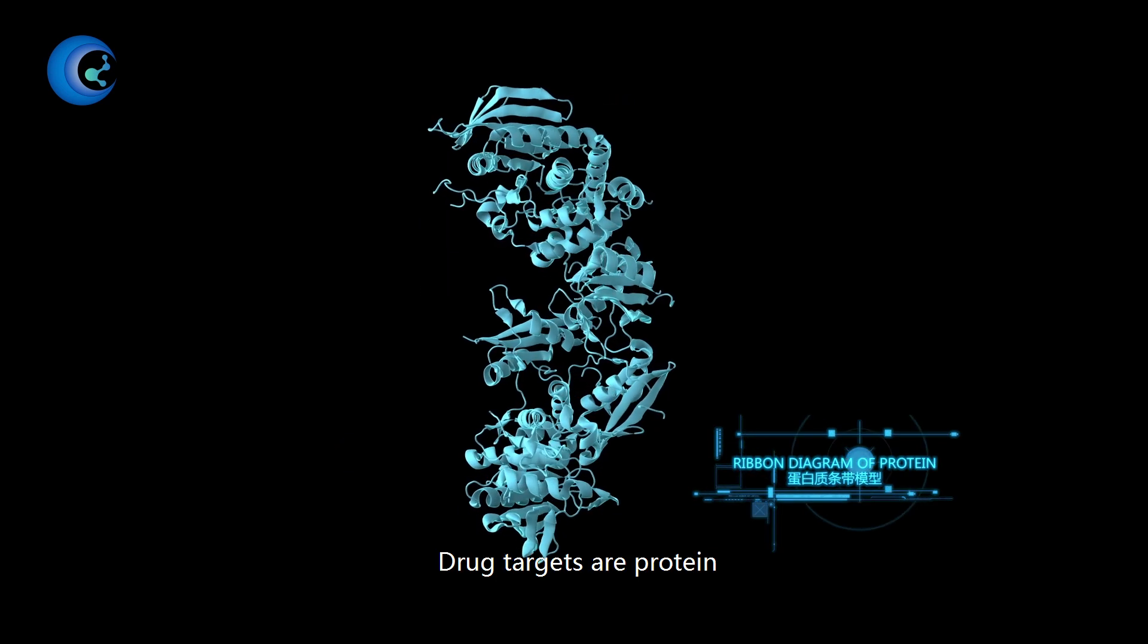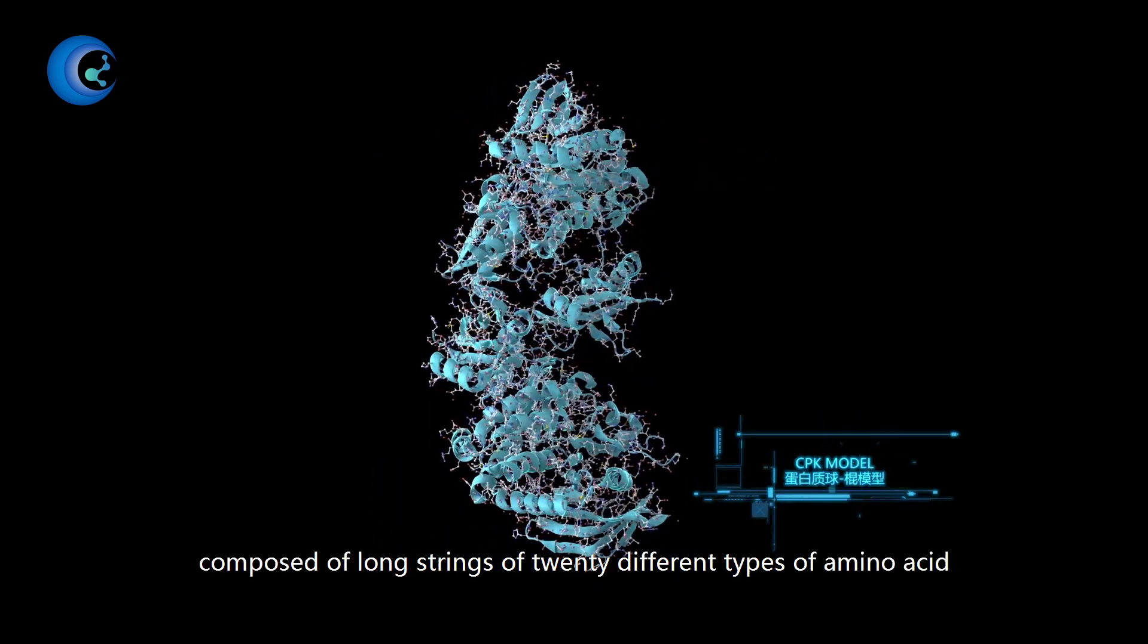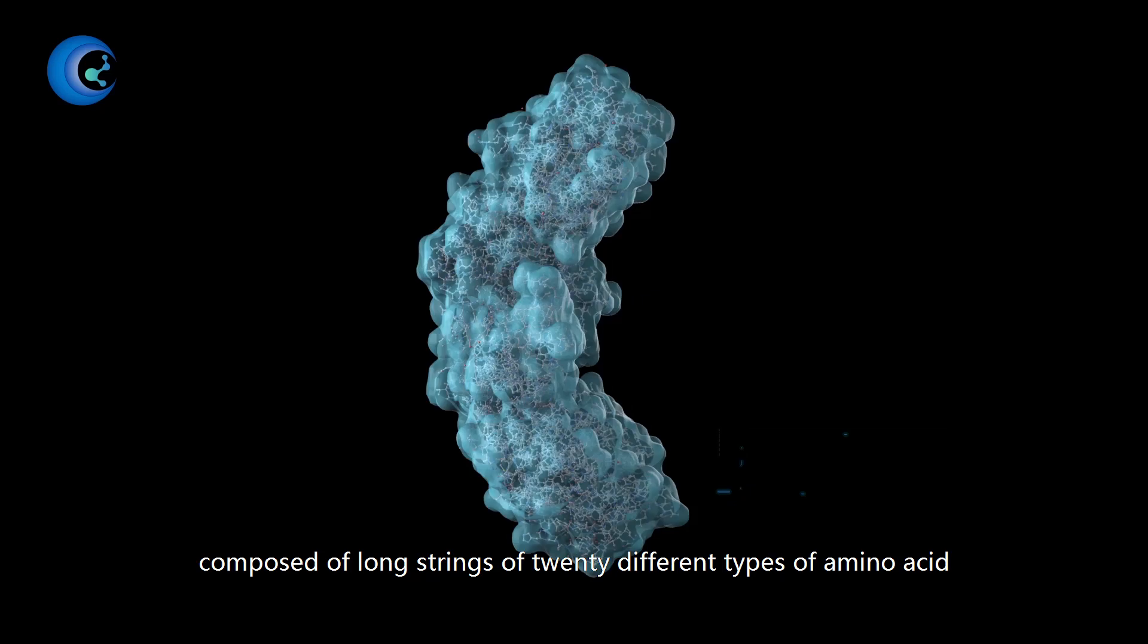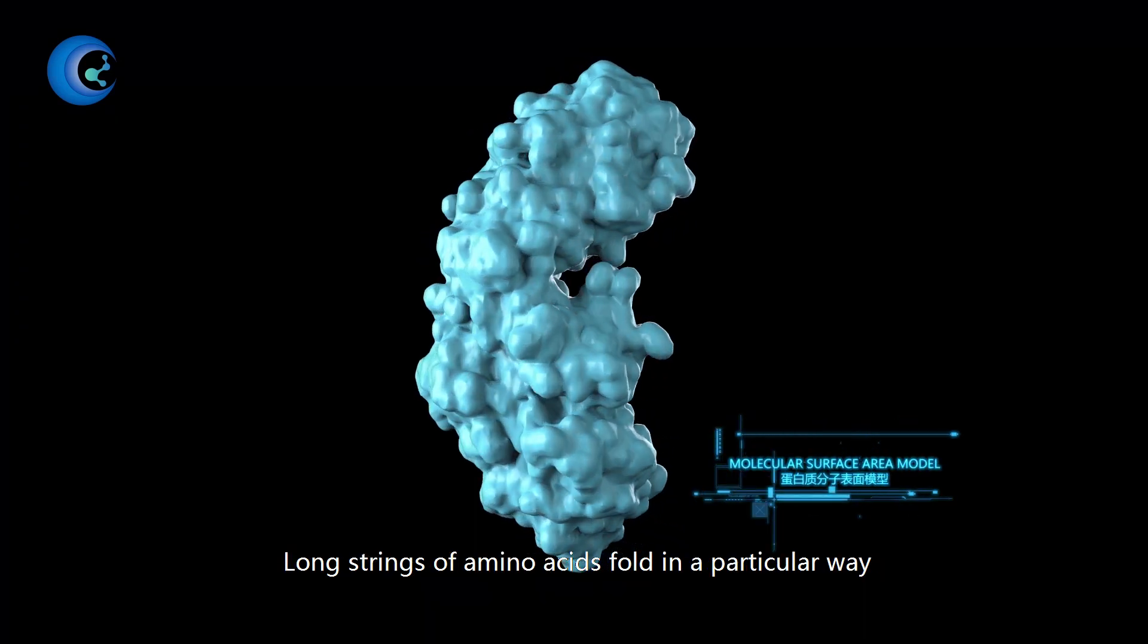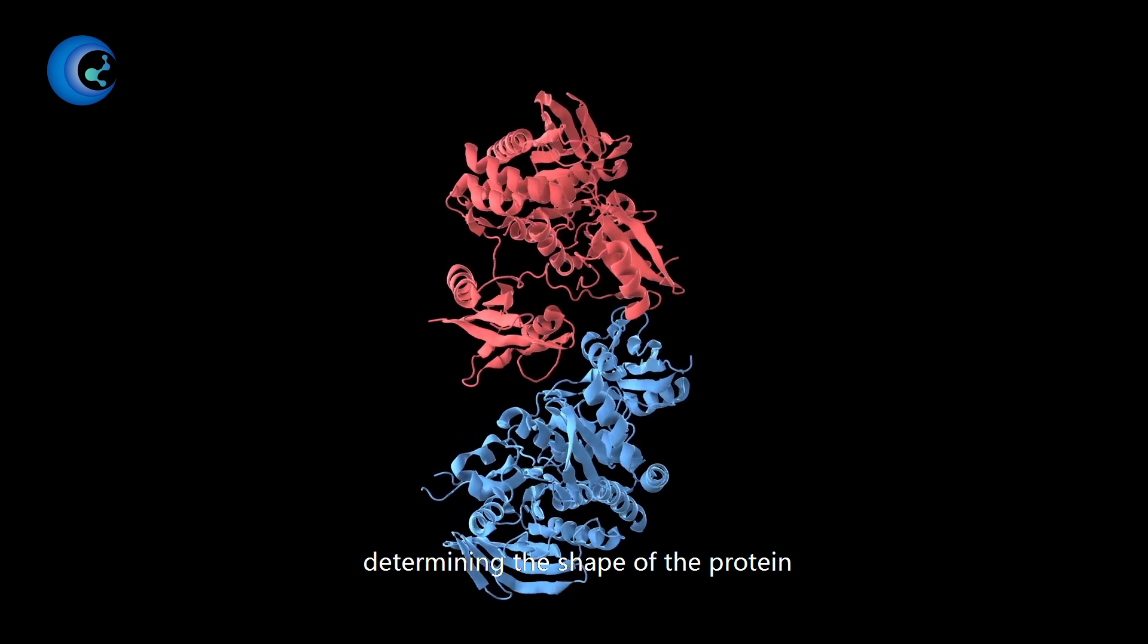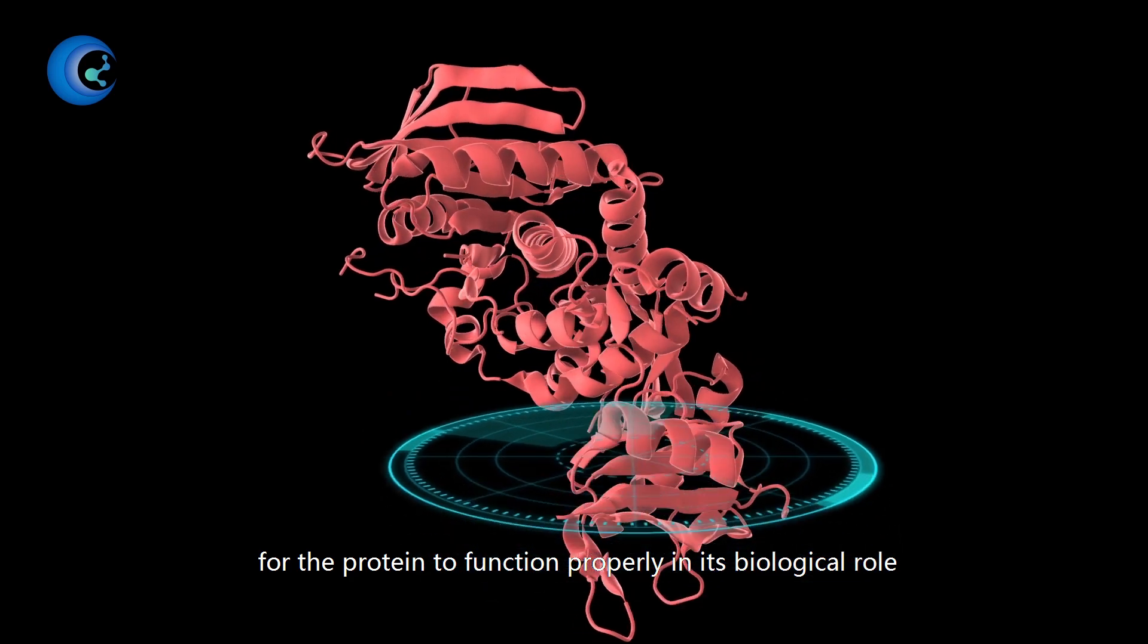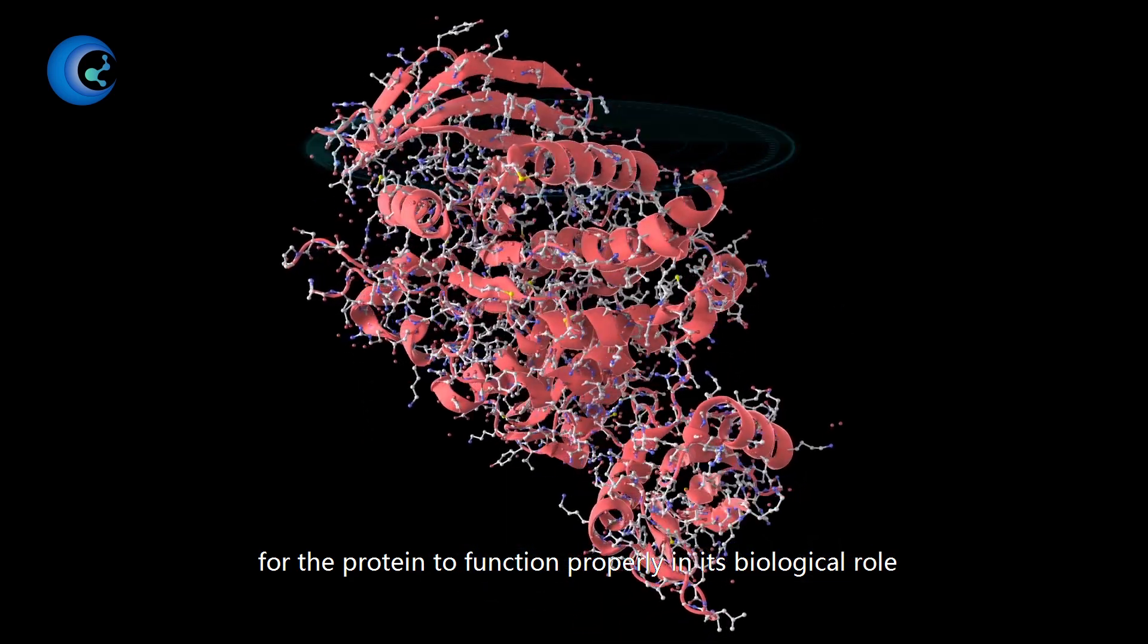Drug targets are proteins. Proteins are complex molecules composed of long strings of 20 different types of amino acids. Long strings of amino acids fold in a particular way determining the shape of the protein. The order of the amino acids is vitally important for the protein to function properly in its biological role.